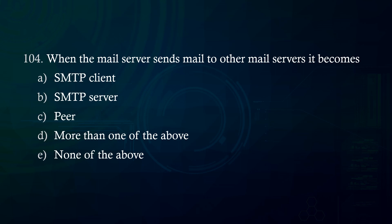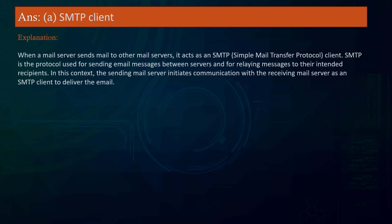When the mail server sends mail to other mail servers, it becomes: A. SMTP client. B. SMTP server. C. Peer. D. More than one of the above. E. None of the above. Answer: SMTP client. Explanation: When a mail server sends mail to other mail servers, it acts as an SMTP (Simple Mail Transfer Protocol) client. The sending mail server initiates communication with the receiving mail server as an SMTP client to deliver the email.